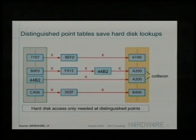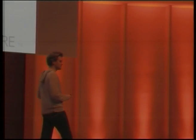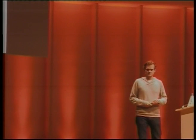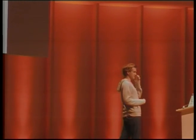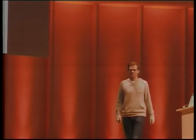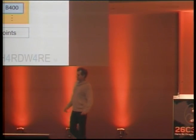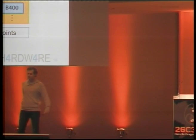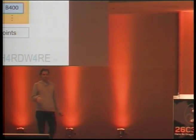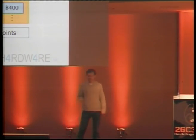A way to get around this is called distinguished points. You only store values in the table that fulfill a certain criteria — in this case, the last half of the value being all zeros. You apply A5/1 over and over again until you hit a value fulfilling exactly this criteria, and that is the end of your chain. The chains are of different lengths since you can't predict when you'll hit such a value, but all end in the same type of number. If you observe a value on the air, you apply A5/1 to it until you hit such a distinguished point, and only then access the hard disk once.